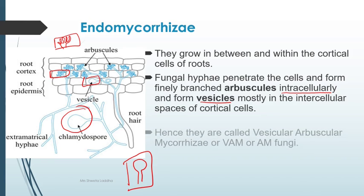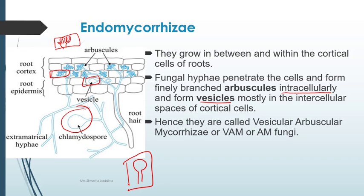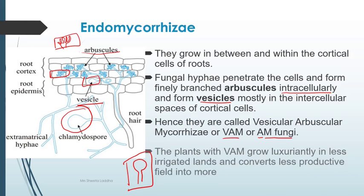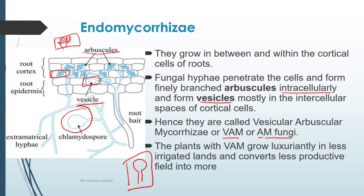These plants are called vesicular arbuscular mycorrhizae, or VAM. Nowadays they are also called arbuscular mycorrhizae fungi (AMF). Endomycorrhizae penetrate inside the cortical cells of the root, forming either arbuscules or vesicles. The function is the same — increasing surface area for absorption of nutrients. Plants with VAM can grow luxuriantly in less-irrigated lands, converting less productive fields into more productive ones, as the arbuscules and vesicles increase absorption capacity.